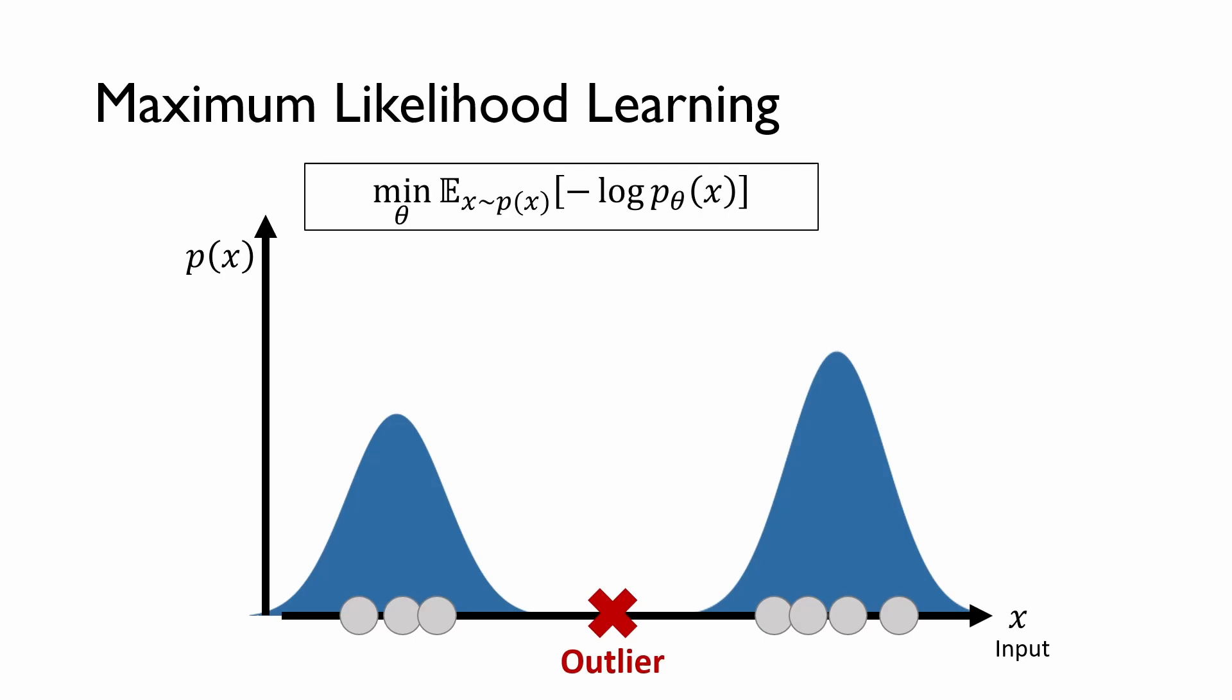On the other hand, maximum likelihood learning can lead to the successful detection of outliers, at least in principle. The key difference here is that the probability density is constrained to be normalized, unlike the reconstruction error. An outlier is assigned with a small probability density because the normalizer constraint is enforced. To use this property, we aim to train an autoencoder using maximum likelihood.